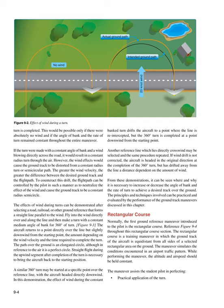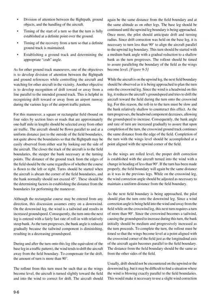Rectangular Course: Normally, the first ground reference maneuver introduced to the pilot is the rectangular course. The rectangular course is a training maneuver in which the ground track of the aircraft is equidistant from all sides of a selected rectangular area on the ground. The maneuver simulates the conditions encountered in an airport traffic pattern. While performing the maneuver, the altitude and airspeed should be held constant. The maneuver assists the student pilot in perfecting: practical application of the turn, division of attention between the flight path, ground objects, and the handling of the aircraft, timing of the start of a turn so that the turn is fully established at a definite point over the ground, and timing of the recovery from a turn so that a definite ground track is maintained.